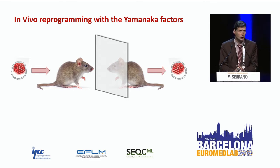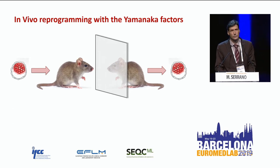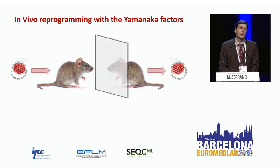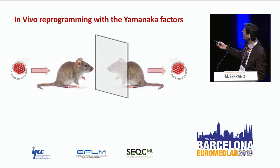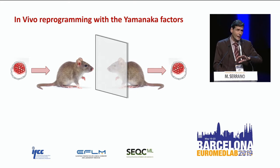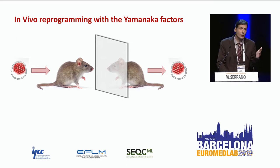The shortcut is to use the Yamanaka factors. Yamanaka, more than ten years ago, found four transcription factors — OCT4, SOX2, KLF4, and MYC — that act as a team and are able to hijack the transcriptional machinery of any cell. They convert any cell into embryonic pluripotent stem cells. These four transcription factors modify the epigenetics, change all the resident transcription programs, and can convert a neuron, an intestinal cell, an alveolar cell, a pancreatic cell — any kind of cell — into a pluripotent stem cell.